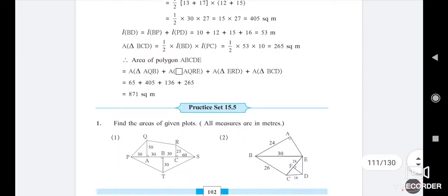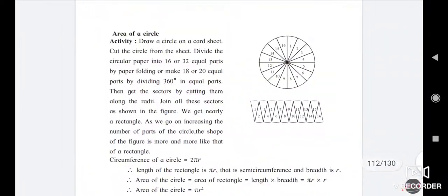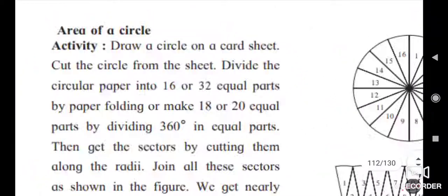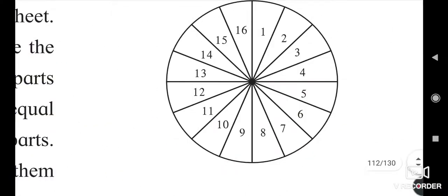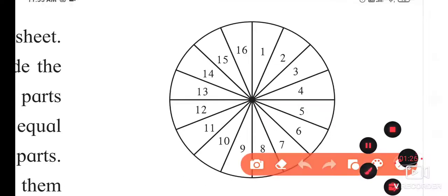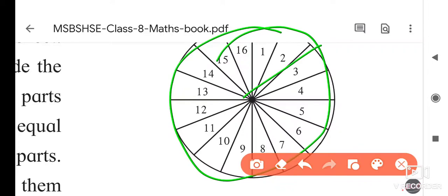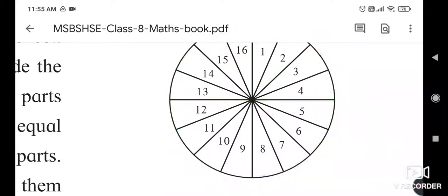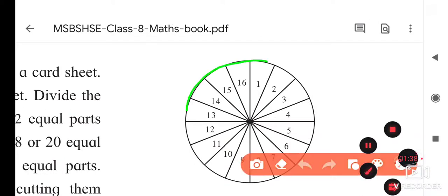That part we also covered in our last lecture. Today we will see the next part. We are going to see the area of a circle. For that, here is an activity: we have to draw a circle with a radius of four centimeters, cut this circle, and then cut it into exact equal parts.